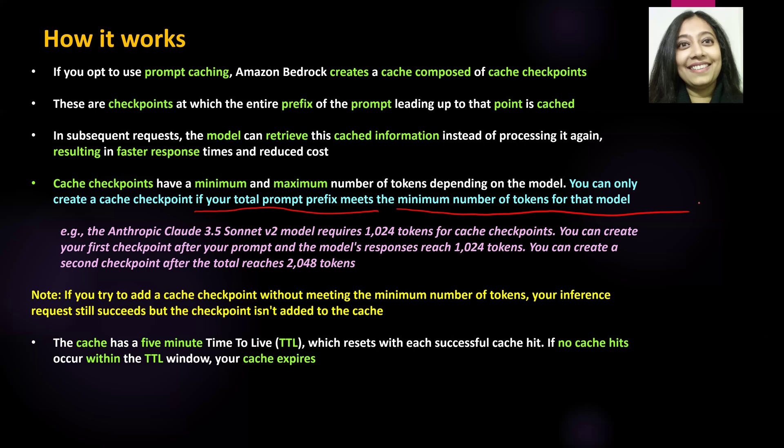For every model the requirement is different. So depending on the model you are using, go and look at the documentation for the minimum number of tokens required to create a cache checkpoint. For example, the Anthropic Claude 3.5 Sonnet V2 model requires 1024 tokens to create a cache checkpoint — that's the minimum number of tokens required.